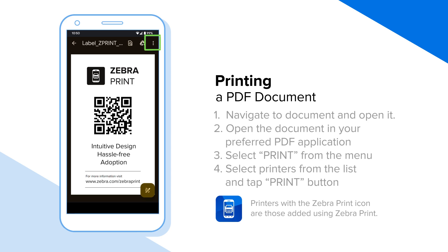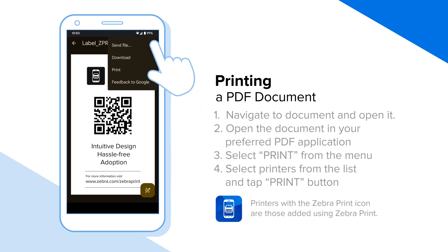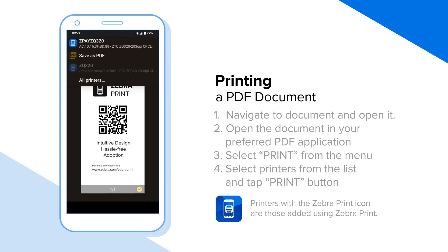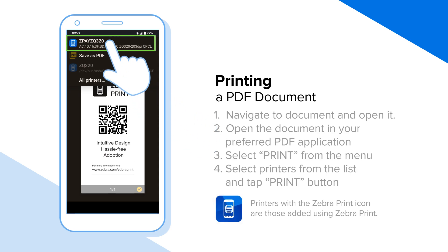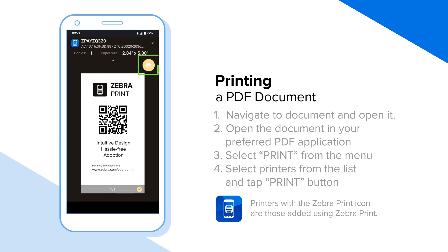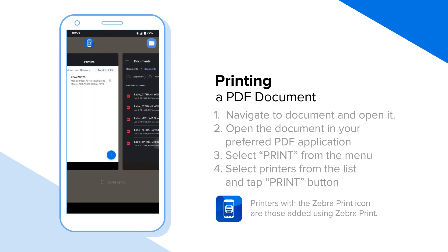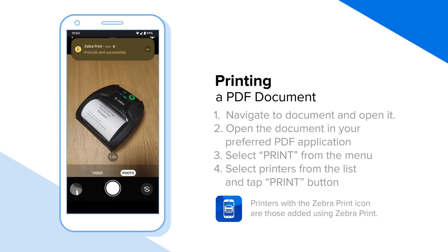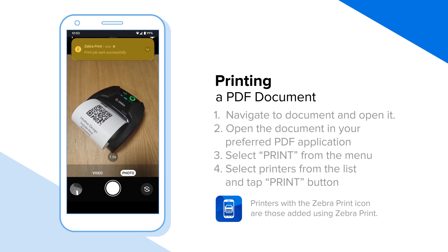Next, select Print from the menu. Then from the list of available printers, select the one you want to print to. Printers with the Zeepr Print icon are those added using Zeepr Print. Tap the Print button. You'll see a notification indicating that a print job was sent to the printer.